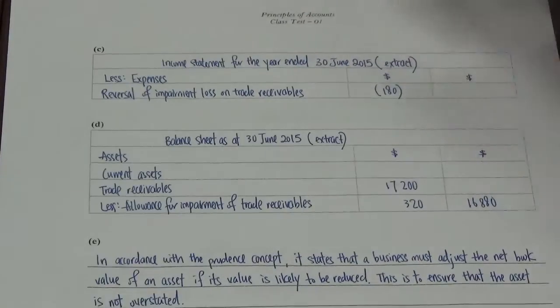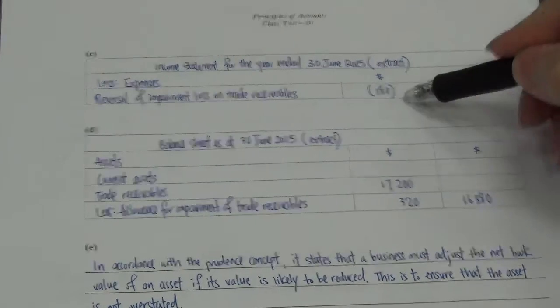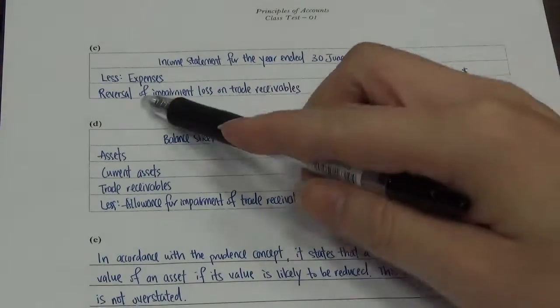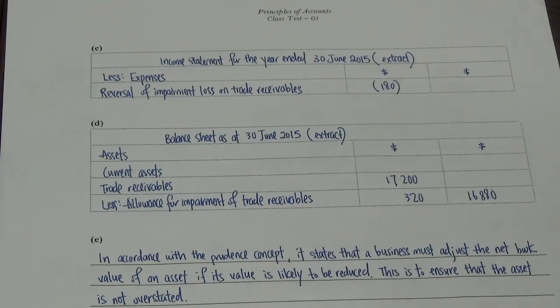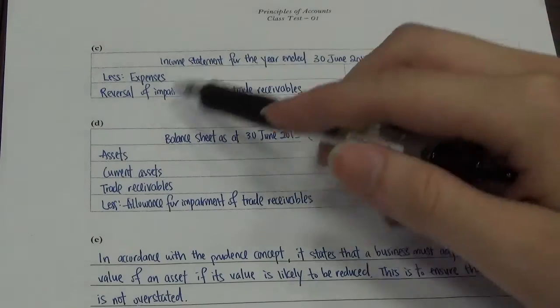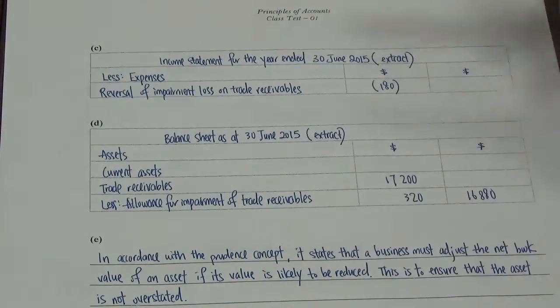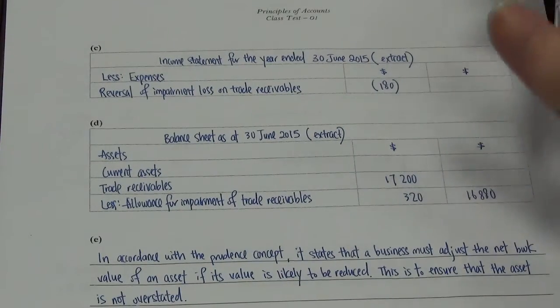As for the income statement, if you notice the working, there's a negative 180. You have to put bracket. It's special. We call it reversal of impairment loss on trade receivable. Whenever you have a negative, it's a reversal. Just take note of that. If it's just a normal one, you just write impairment loss on trade receivable. Without bracket, just 180. But this question, it's a reversal.